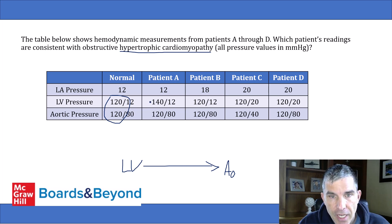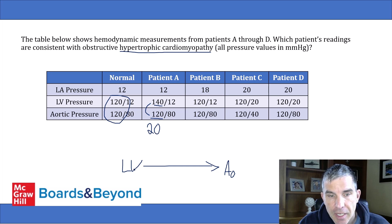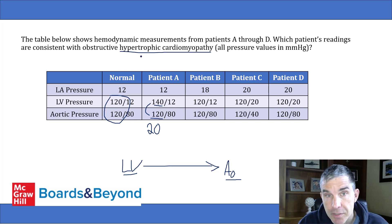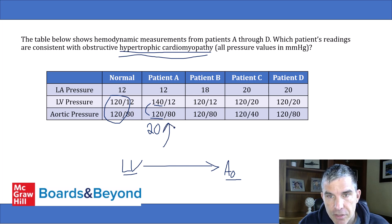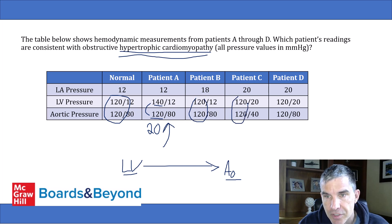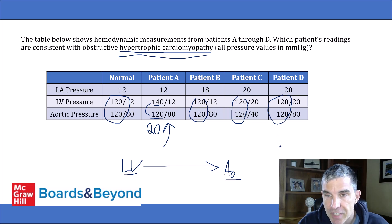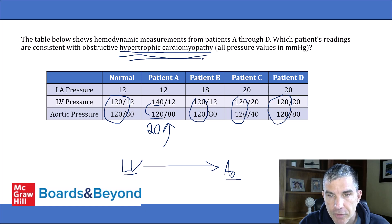Looking at patient A: the LV pressure is 140 mmHg during systole and the aortic pressure is 120 mmHg — a pressure gradient of 20 mmHg. This indicates obstruction to blood flow, consistent with hypertrophic cardiomyopathy (or aortic stenosis). The other three patients all have identical systolic pressures in the left ventricle and aorta, so those answers cannot be correct — none of them have an obstruction to blood flow out of the left ventricle.